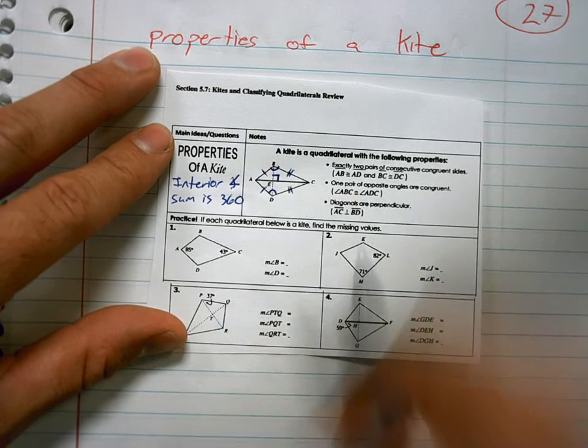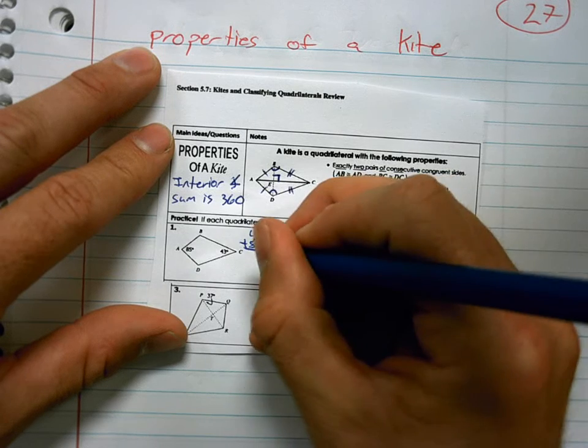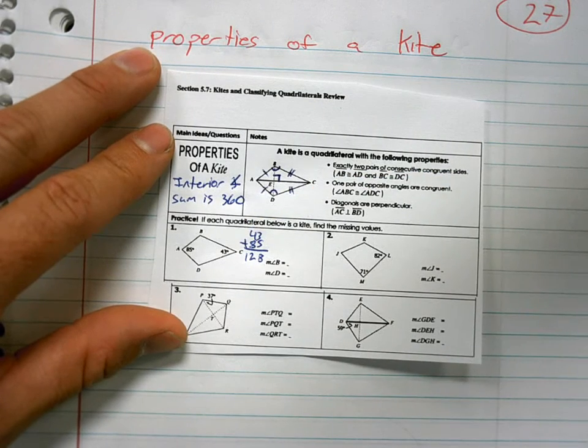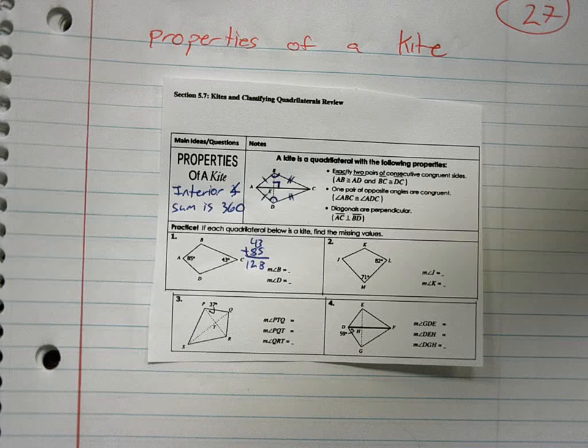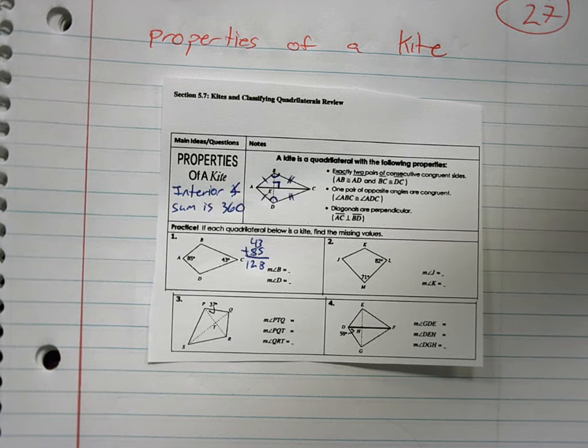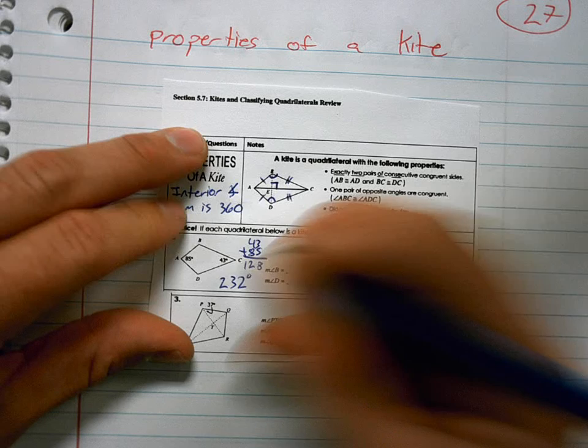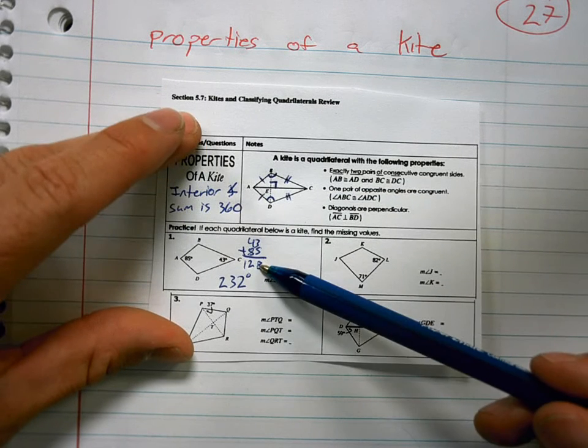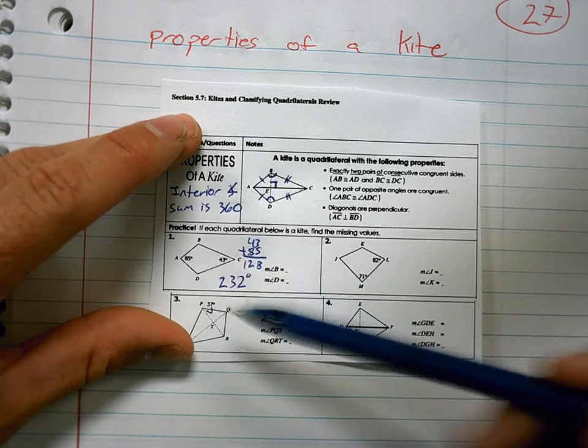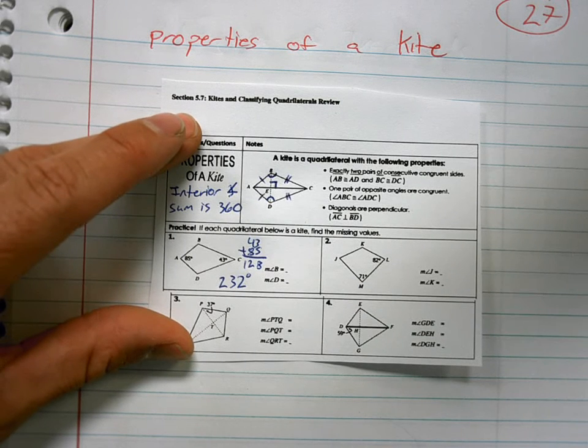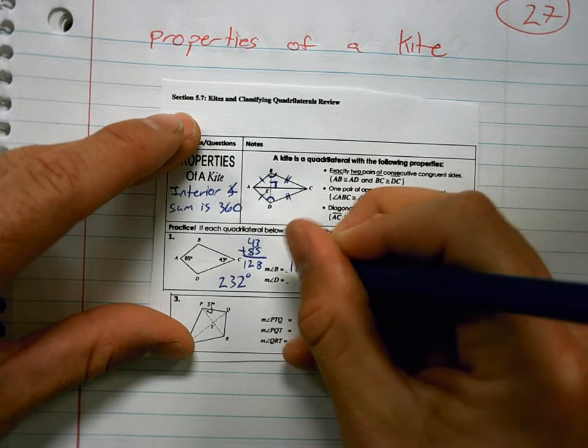So 43 plus 85, add those up, get 128. I subtract 128 from 360, get 232. So these two angles, angle B and angle D must equal 232 added together. So I take 232 and divide it by two. So each angle is 116.